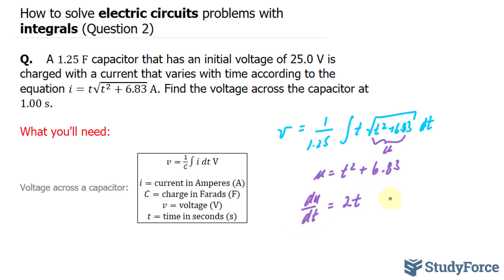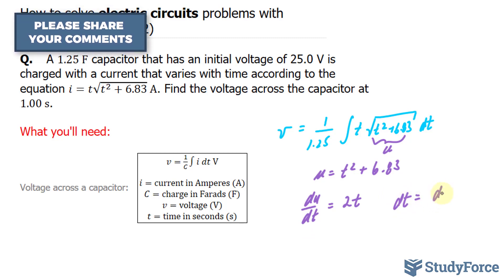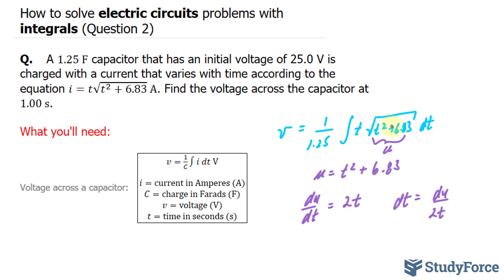Solving for dt, I end up with dt is equal to du over 2t. So on my next line, I'll substitute where this was t squared plus 6.83 with u, and dt with du over dt. Look what happens.